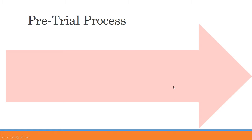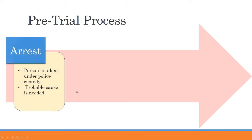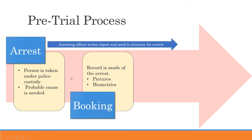The criminal justice process usually starts with an arrest. Most likely, you have committed a crime and police officers investigated the circumstances of the crime and found probable cause to believe that you perpetrated that crime. So they arrest you and take you into custody. Once you're taken into custody, you're going to go to the next stage of the process, which is booking.